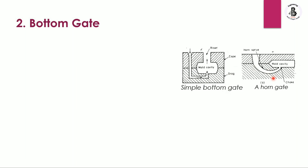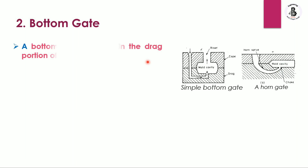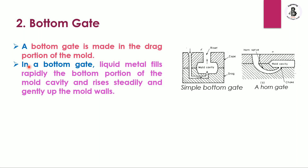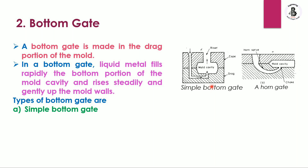The first type of bottom gate is the simple bottom gate system, and the second is the horn gate system. In the horn gate arrangement in the cope and drag, the molten metal enters from the side and the horn-shaped gating system inlets the molten metal into the mold cavity. A bottom gate is made in the drag portion of the mold. In a bottom gate, the liquid metal rapidly fills the bottom portion of the mold cavity and rises steadily and gently along the mold walls.